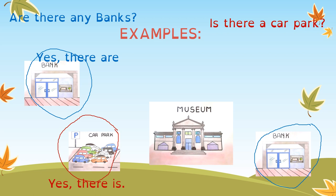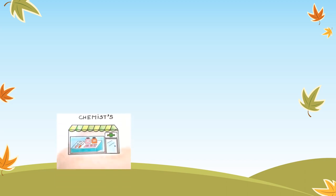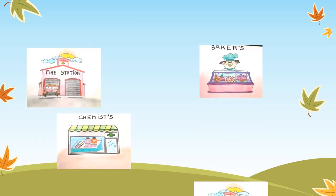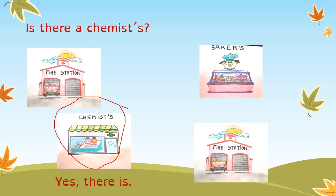One more question: 'Is there a chemist?' What do you think — yes or no? No, so: 'No, there isn't.' More examples: 'Is there a chemist?' Now look here — so the answer is 'Yes, there is.'